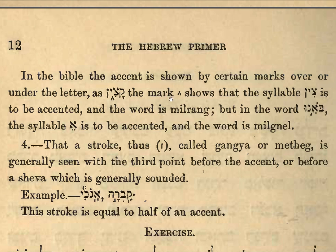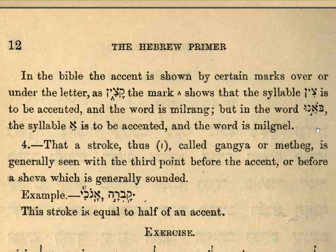In the Bible the accent is shown by certain marks over or under the letter. So here we have one: katsin, katsin. This mark, the etnach, shows that the syllable 'tsin' is to be accented, and the word is milra — katsin. But in the word bo-e-nu, bo-e-nu, the syllable E is to be accented, and the word is mil'el. It's not bo-e-nu but bo-e-nu.